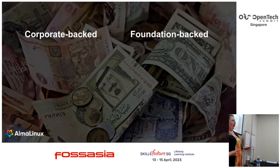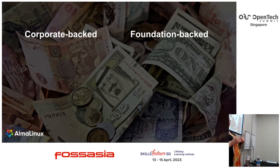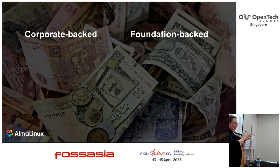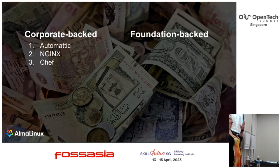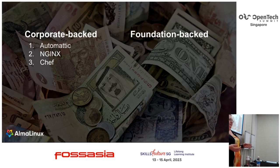I ended up dividing things this way: first, we're going to exclude all single-contributor, single-funding projects — you and your buddies got together and made this thing — because we're talking about bigger communities that have real money behind them. Those break down into either corporate-backed or foundation-backed. Corporate-backed includes things like Automattic, NGINX, Chef, Red Hat — many companies that have successfully monetized an open source project. These companies make a lot of money and sustain a very big business next to an open source project.